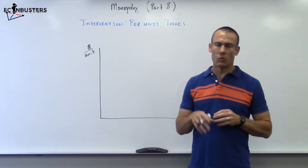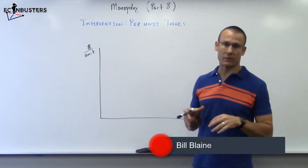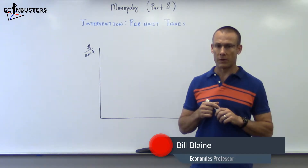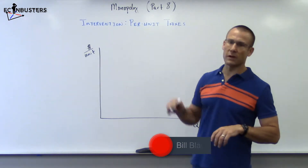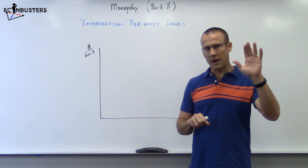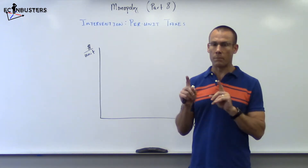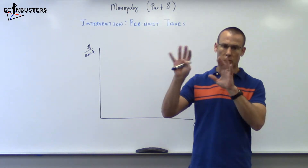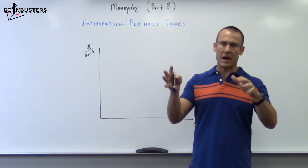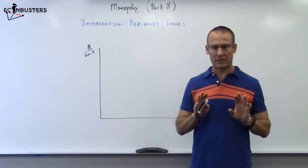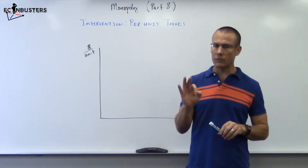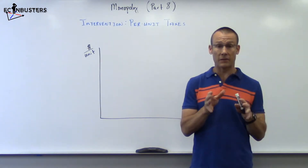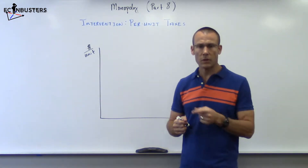Hey everybody, welcome back. We're on monopolist part eight. If you made it this far, congratulations. We're going to do some intervention. Right from the top: in this video we're going back to no price discrimination. If you've watched parts six and seven, we were doing perfect price discrimination. Now we're heading back to no price discrimination, and when we have no price discrimination, monopoly power ends up having a dead weight loss associated with it.